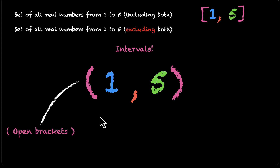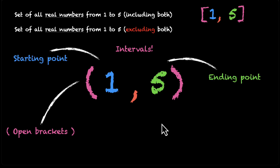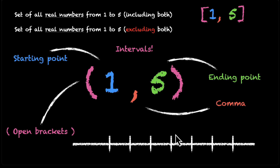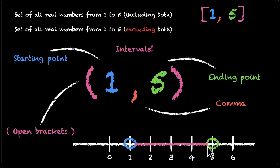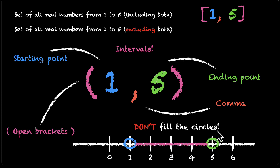This is your curved bracket, also called an open bracket. Then you have your starting point, ending point, and comma. We can draw this on the number line as well. It's the same setup: we start with 1 and end at 5 and connect both of them. But the only difference is these circles are now open — they are not filled. When you don't want a point to be included, don't fill the circle.